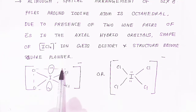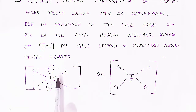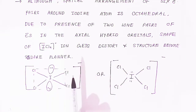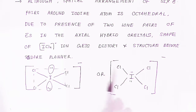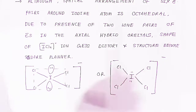Because of these lone pairs, the structure will become square planar. This is how you can explain the pentavalent structure of the pentavalent anions. Because of the negative charge we call it an anion — pentavalent anion.